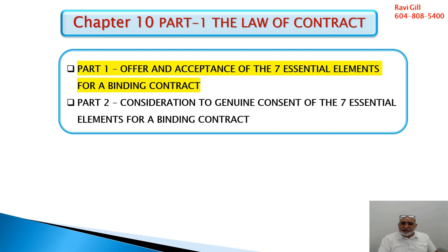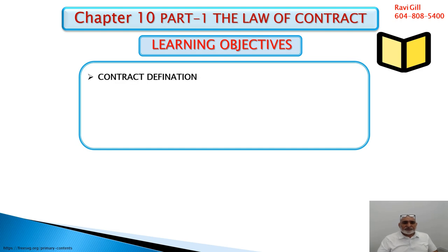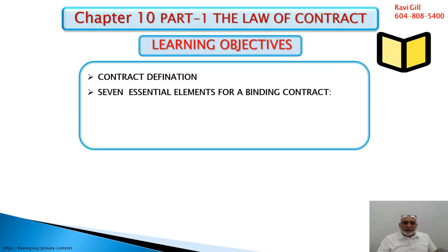If any one of the seven is not there, then it is not a binding contract. In part one we will discuss the first two elements. In part two we will review the first two and then go through the remaining five. Our learning objectives for part one are the contract definition and the seven essential elements — specifically the offer and the acceptance.